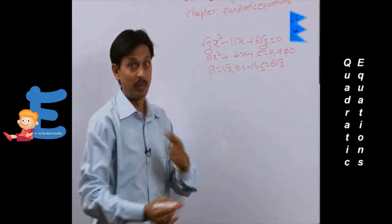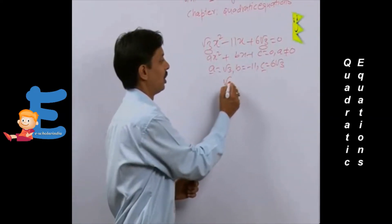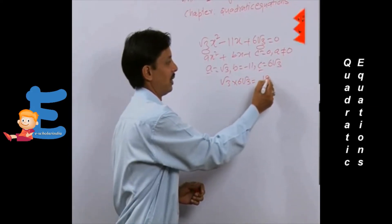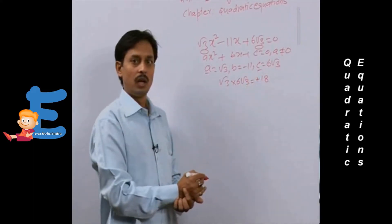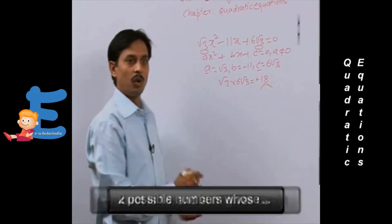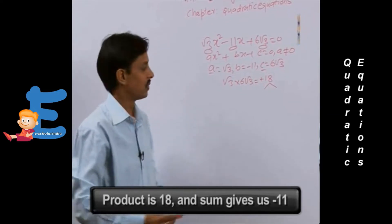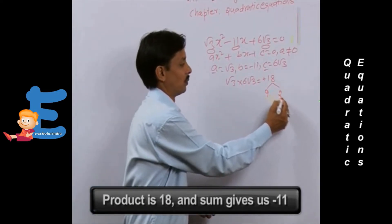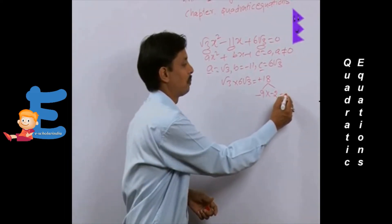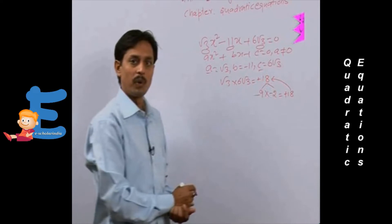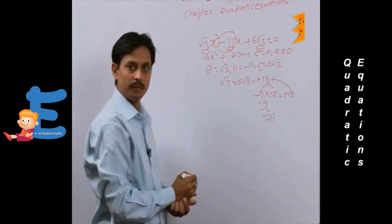If we multiply a and c — it is mandatory to multiply when solving any quadratic equation with splitting the middle term — √3 × 6√3 gives us 18, because √3 × √3 = 3, and 3 × 6 = 18, positive 18. Now, we will find two numbers whose product is 18 and whose sum is the middle term coefficient -11. That's why this method is called splitting of the middle term. 18 = 9 × 2, but both numbers must be negative: (-9) × (-2) = +18.